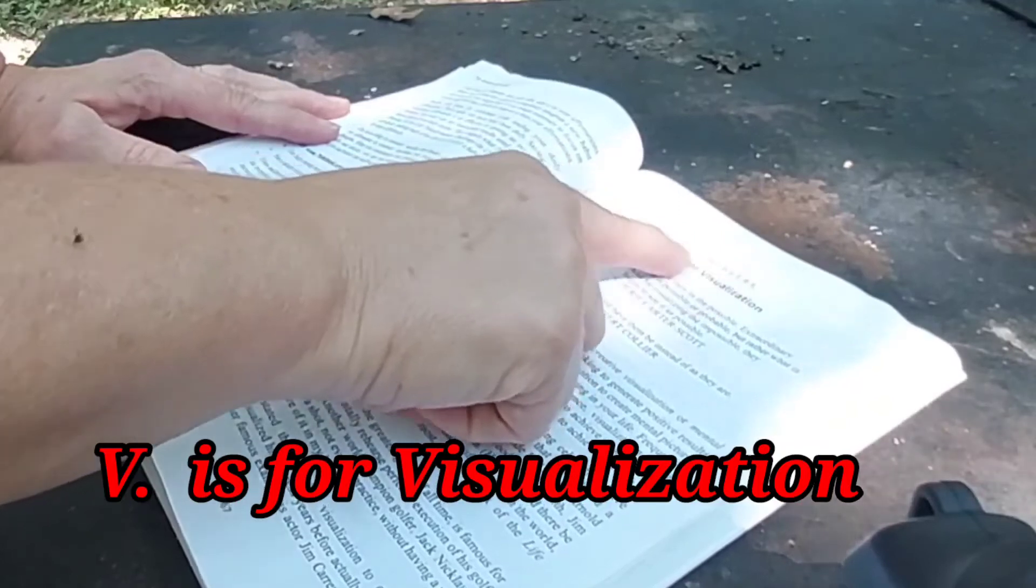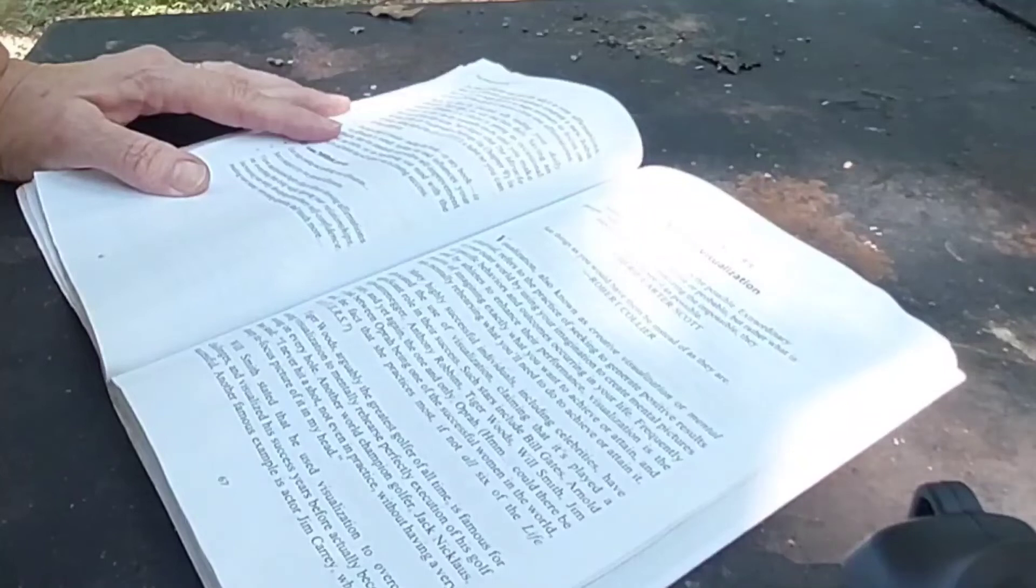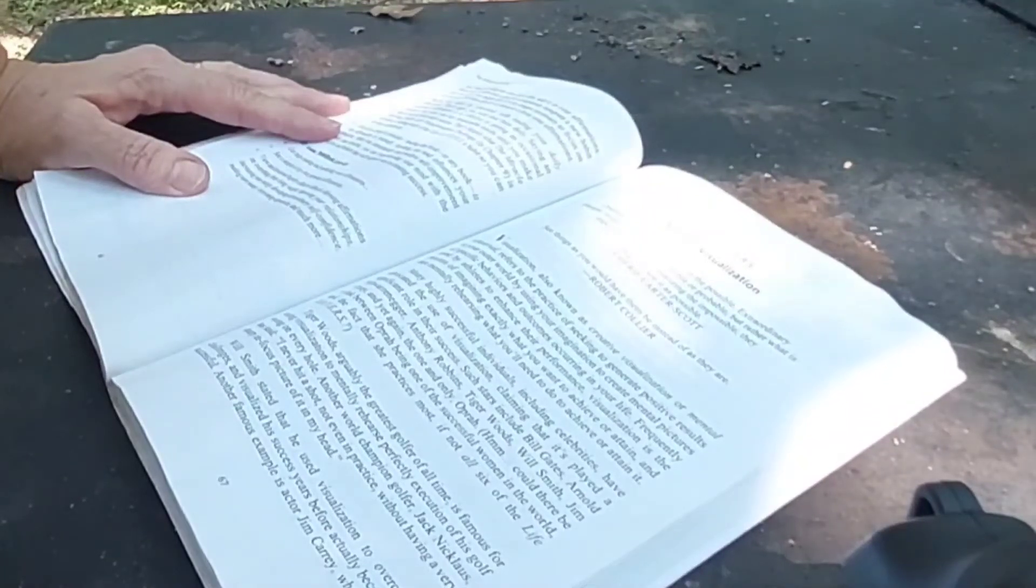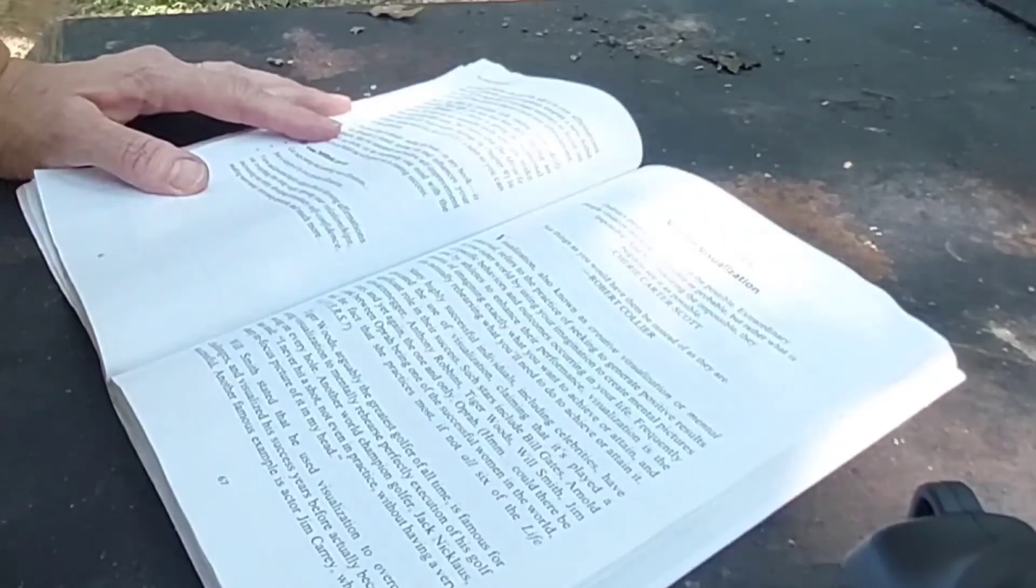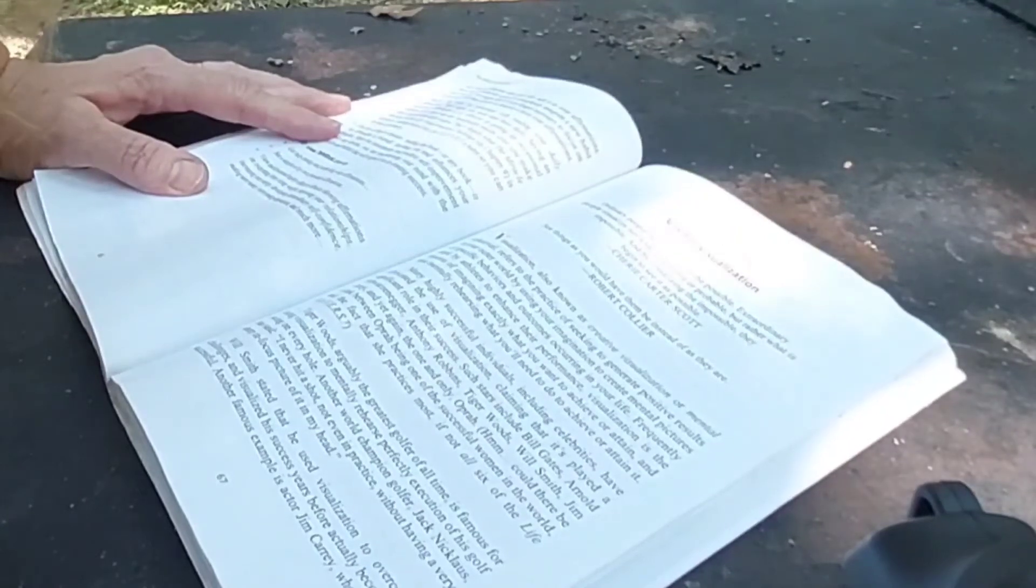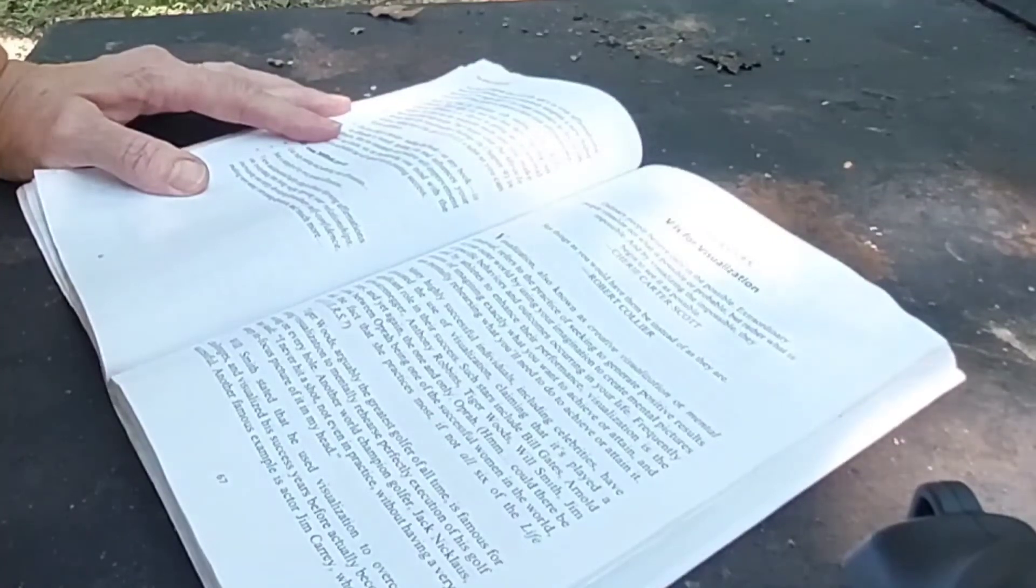Life Savers. V is for visualization. Ordinary people believe only in the possible. Extraordinary people visualize not what is possible or probable, but rather what is impossible. And by visualizing the impossible, they begin to see it as possible. Cherie Carter Scott. See things as you would have them be instead of as they are. Robert Collier.